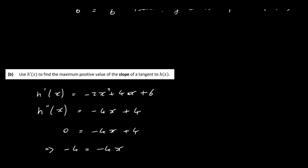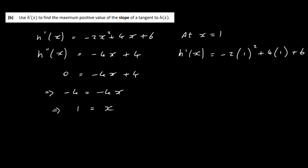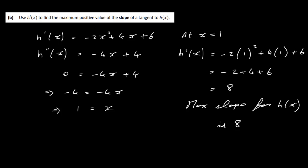So we have to find the maximum possible value for the slope of a tangent. At x equals 1, h prime x is equal to minus 2 times 1 squared plus 4 times 1 plus 6. That gives us minus 2 plus 4 plus 6, which is 8. So our maximum slope for h of x is 8.